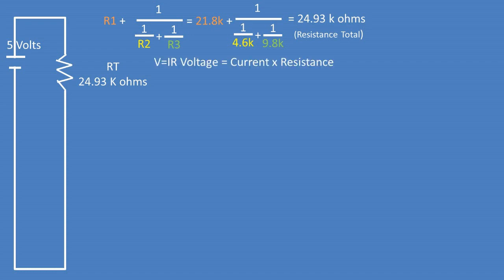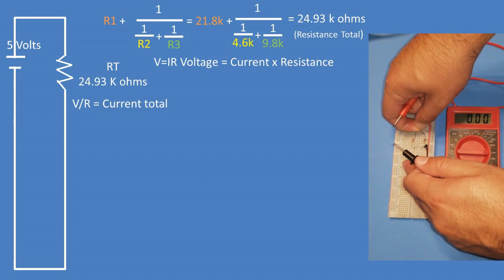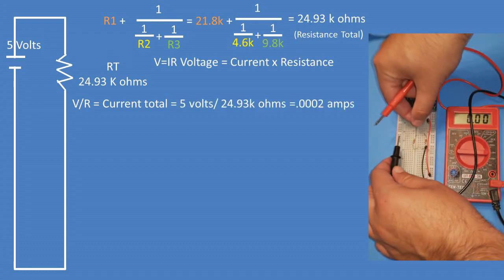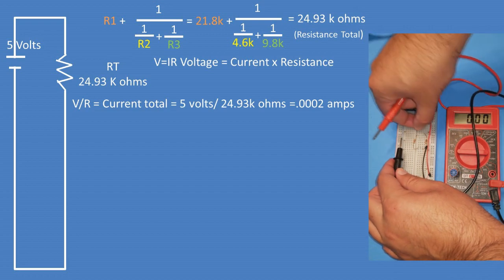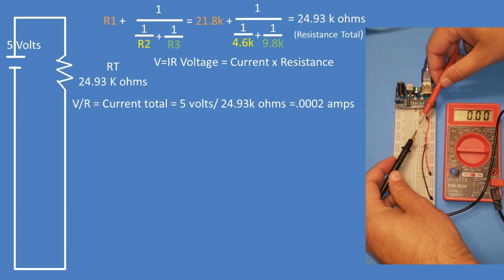Recall that V equals IR, or in other words, voltage equals current times resistance. We can rearrange the formula to get the voltage over the resistance to be equal to the total current in the circuit. After plugging in our 5 volts voltage source and the resistance total of 24.93 kOhms, we have a current of 0.2 milliamps for our total current.